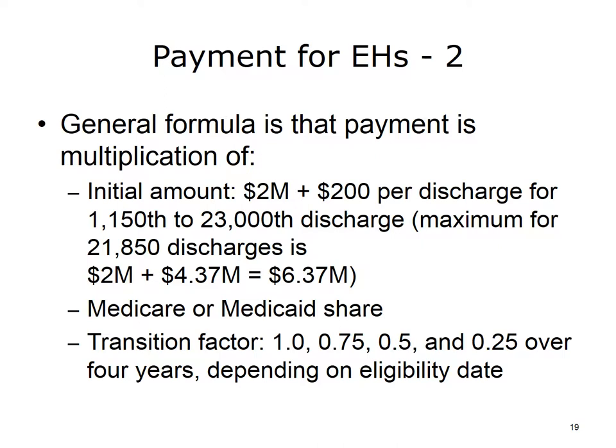An overview of the general formula for hospital payments is listed here. There is a base amount of $2 million for an eligible hospital and then an incremental amount of money per discharge starting at the 1,150th patient for a given year, up to 23,000 patients. This means the maximum for 21,850 discharges would be $2 million for the base and $4.37 million, resulting in a maximum payment of $6.37 million. The money is then multiplied by the Medicaid or Medicare share that the hospital has. There is also a transition factor with the full amount paid in the first year, three-quarters in the second year, half in the third year, and a quarter in the fourth year. Payment starts when the hospital becomes eligible with no penalty for starting later.